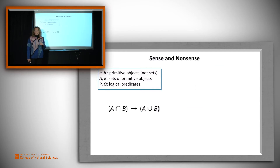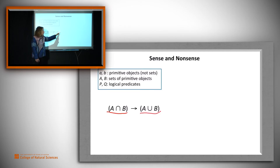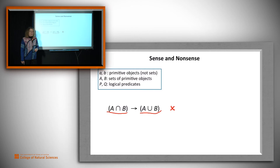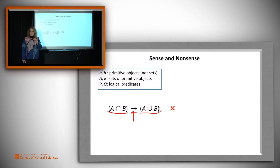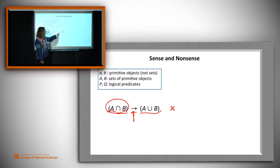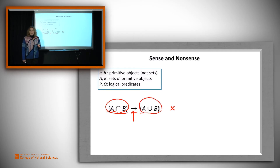Let's consider this example: A intersect B implies A union B. That is nonsense. 'Implies' is a logical operator — it needs to have logical statements as its arguments. A∩B is a set, and so is A∪B. They're not logical claims, and thus we can't join them with an implies.